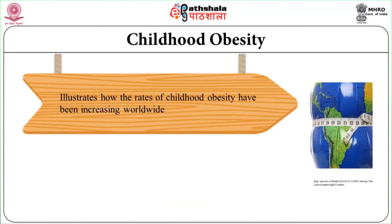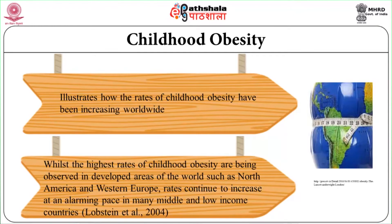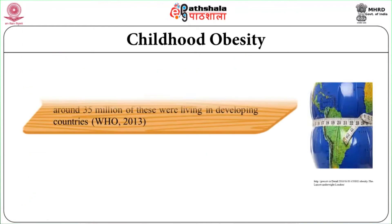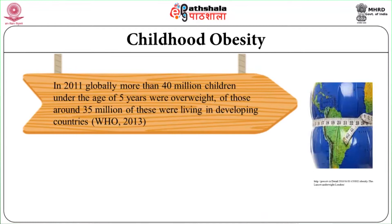Figure 1.1 illustrates how the rates of child obesity have been increasing worldwide. While the highest rates of child obesity are being observed in developed areas of the world such as North America and Western Europe, rates continue to increase at an alarming pace in many middle and low-income countries (Lobstein et al., 2004). In 2011, globally, more than 40 million children under the age of 5 years were overweight, of whom around 35 million were living in developing countries (WHO, 2013).